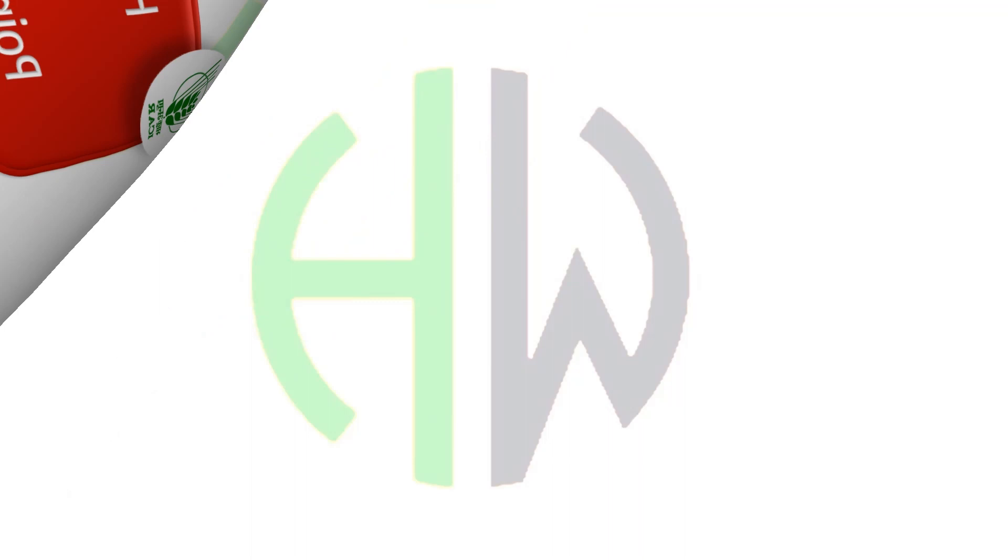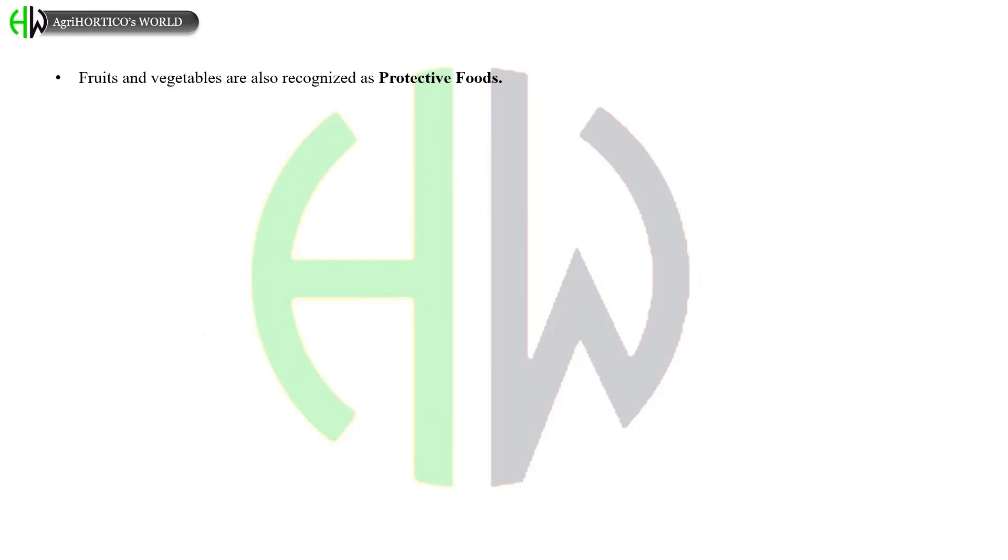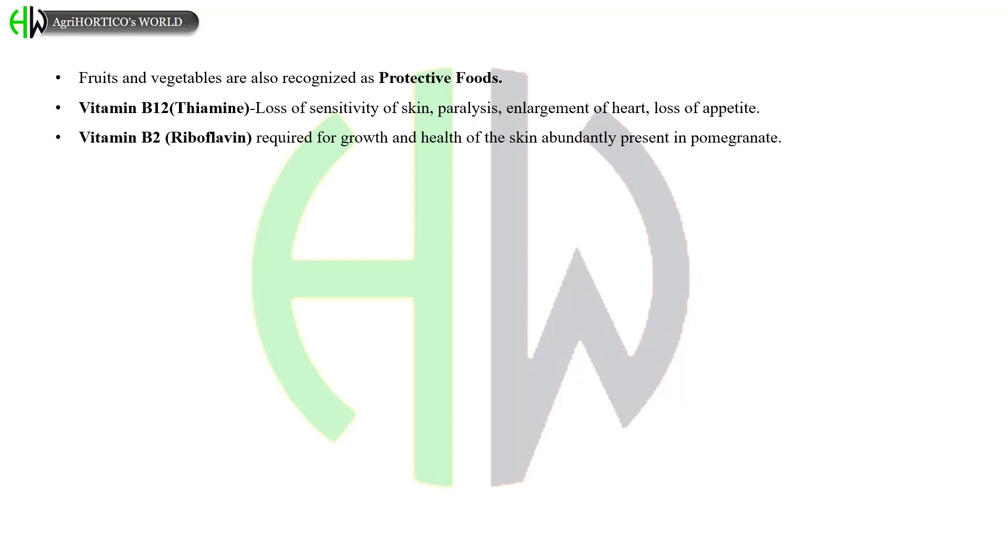Fruits and vegetables are also recognized as protective foods. Vitamin B1, that is thiamine, its deficiency leads to loss of sensitivity of skin, paralysis, enlargement of heart, and loss of appetite. Vitamin B2, that is riboflavin, is required for the growth and health of the skin, abundantly present in pomegranate. Deficiency of phosphorus leads to bleeding of gums.